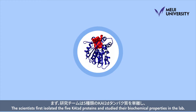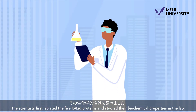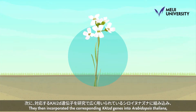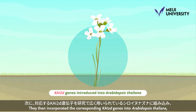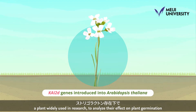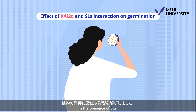The scientists first isolated the five CHI2D proteins and studied their biochemical properties in the lab. They then incorporated the corresponding CHI2D genes into Arabidopsis thaliana, a plant widely used in research, to analyze their effect on plant germination in the presence of SLs.